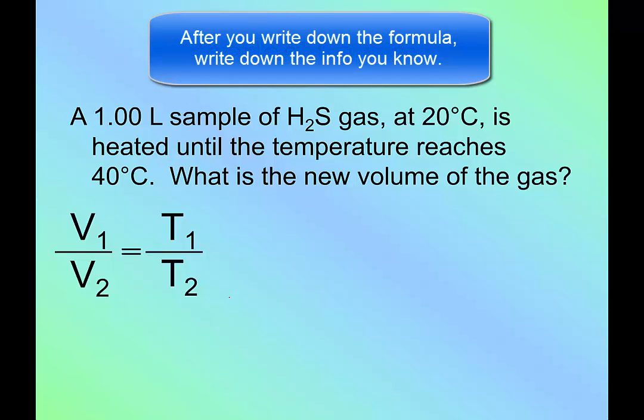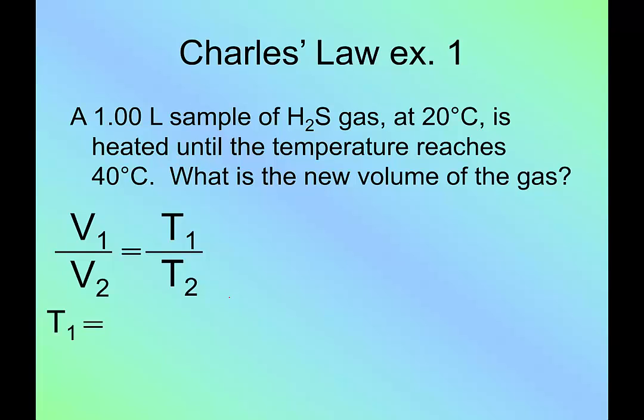Now just like we did previously, you want to write down what you know. So I know that temperature 1 is 20 degrees Celsius. How do I know that? Because it's the first temperature that's given right here. But something very specific has to happen here. You have to add another factor. See, we don't work in Celsius when it comes to gas laws. We work in something called Kelvin.